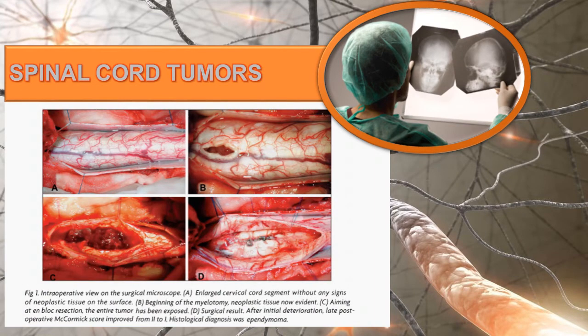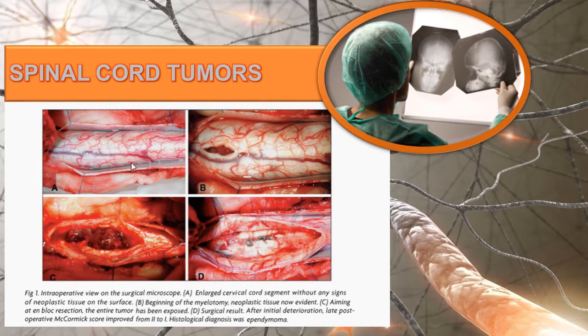Spinal cord tumors may be primary tumors originating in the spinal cord or secondary tumors that are metastases from cancer elsewhere in the body. Pain is often a result of cord compression and can come from infiltration of spinal tracts and irritation of spinal roots. Imaging such as MRI is used for diagnosis, and primary management is to remove the tumor if possible. Referral to the American Cancer Society may also be appropriate.